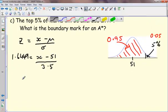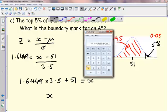Once we're there, it's just rearranging. So I'm going to multiply both sides by 3.5. 1.6449 times 3.5. And then I'll need to add on the 51. It will give me the x value that I want. So 1.6449 times 3.5. I'll add on 51. I'll say 56.76.